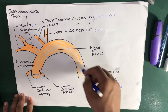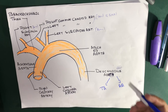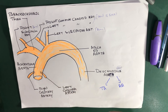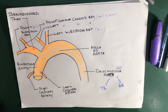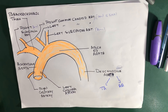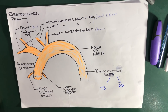Now let's talk about the descending aorta. It is further divided as it goes downward: the first portion is called the thoracic aorta. When it crosses the diaphragm through the aortic hiatus, it changes its name to the abdominal aorta.